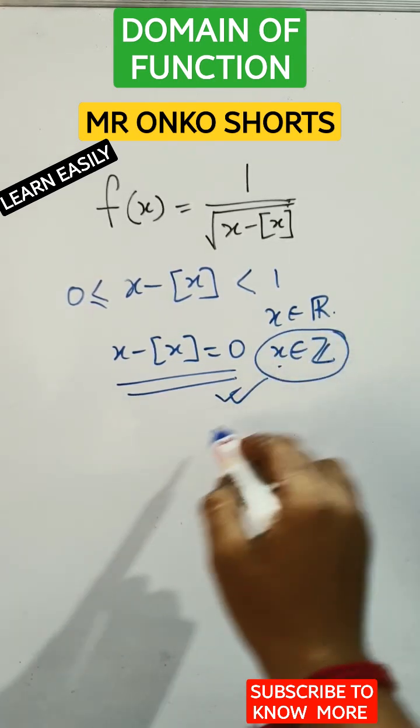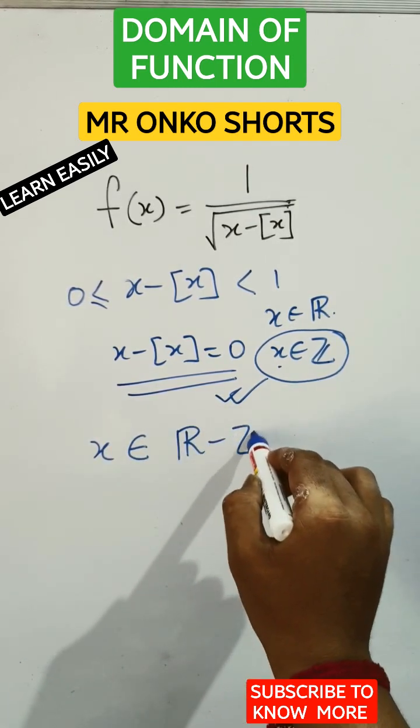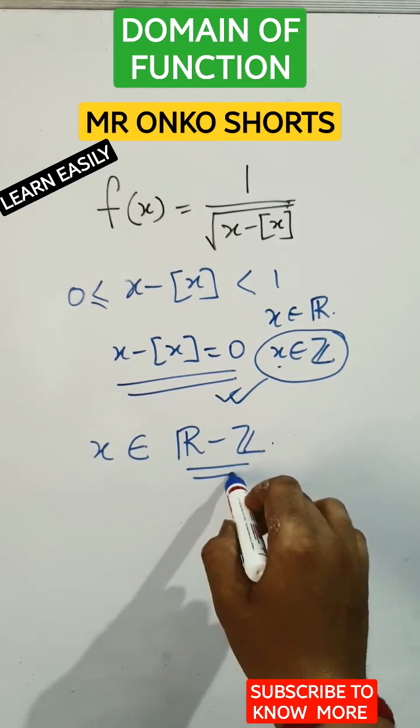So x can't be integer. So the domain will be x belongs to real number set minus integer set. The answer is this. This is the domain.